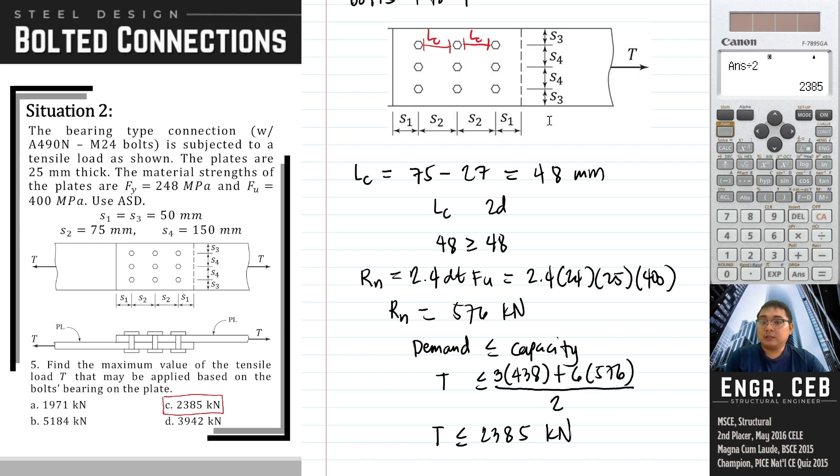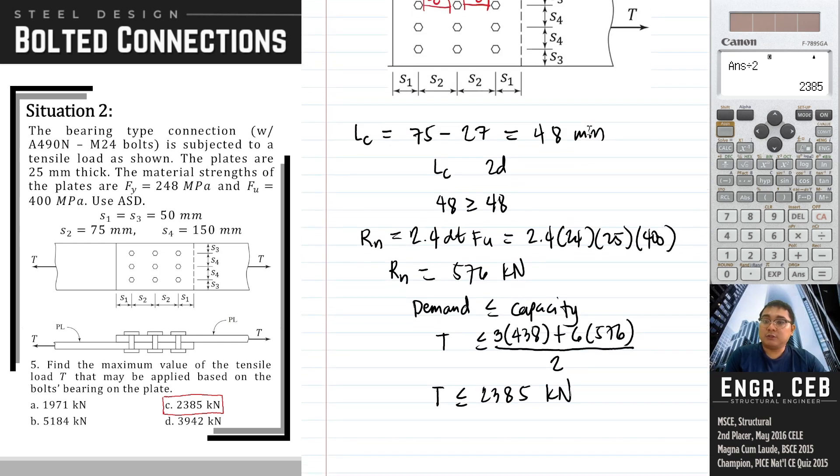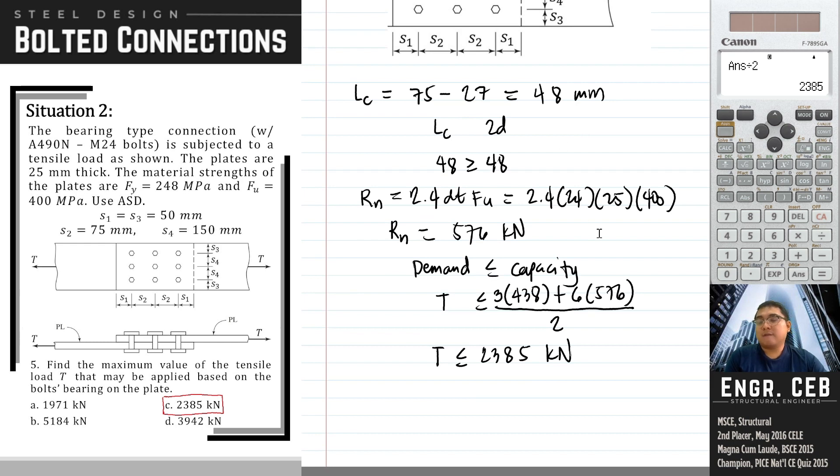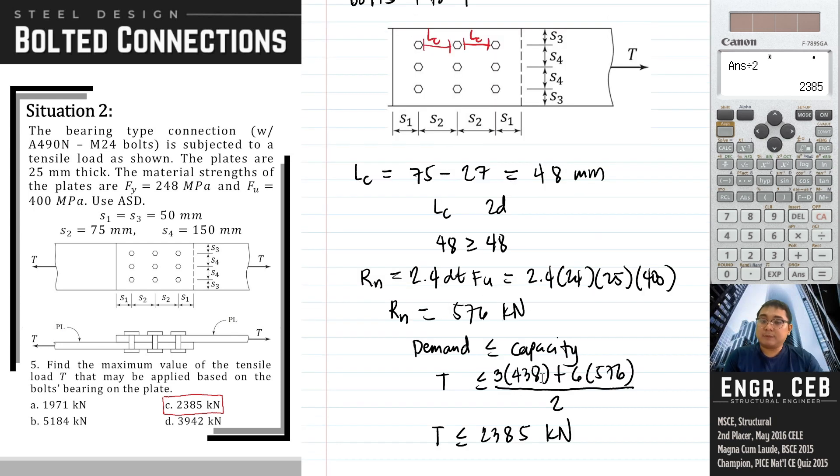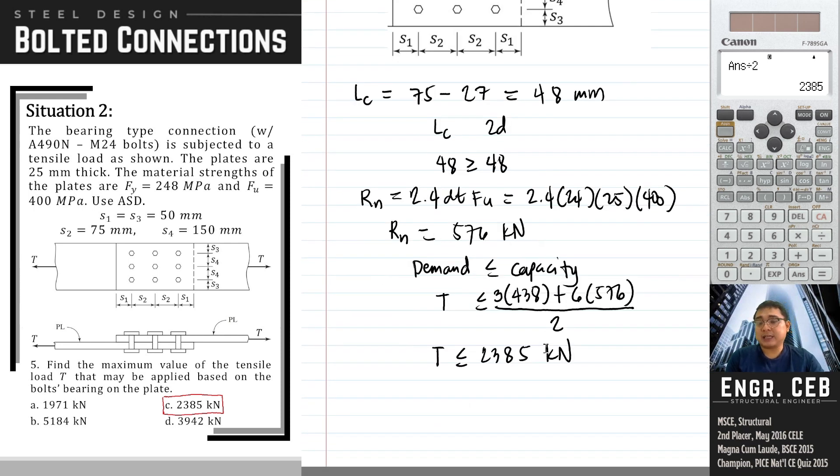Therefore, instead of using different strengths for the bolts, some authors like McCormack use only one capacity in bearing for all the bolts, and that is the lesser between the two. We have a capacity of 438 kN from bolts 1, 2, and 3, so that would be used for all the bolts to simplify the calculation. Therefore, using that logic, T is less than or equal to 1971 kilonewton. If that is the case, the answer will be letter A.